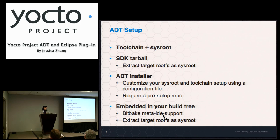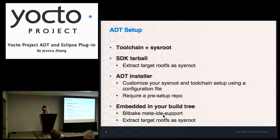Especially if you generate using the matching target image, that SysRoot content is exactly what you have on your target. The second option is the ADT installer. With the ADT installer, it depends on the package format being IPK, and it requires you to set up a pre-populated repo based on your build outputs. What it does is give you ultimate flexibility to map your toolchain and SysRoot setup. With the SDK tarball, you have a toolchain and SysRoot one-to-one towards one target. With the ADT installer, it uses configuration files allowing you to set up your SysRoot — maybe using different root filesystems, different images, or different toolchains for different architectures.